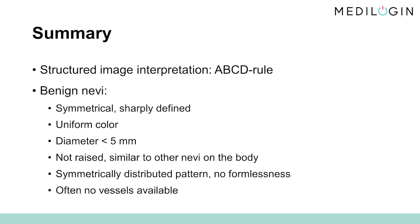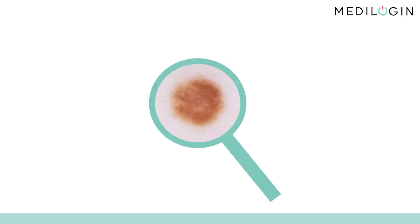There are no basic patterns that are purely benign, and several patterns can exist at the same time. A symmetrically distributed pattern is more likely to indicate benignity. Further criteria, such as vessels and so on, are rarely present. For more pictures, we recommend taking our quiz. Here, we train your gaze, and you get to know many different benign nevus variants.